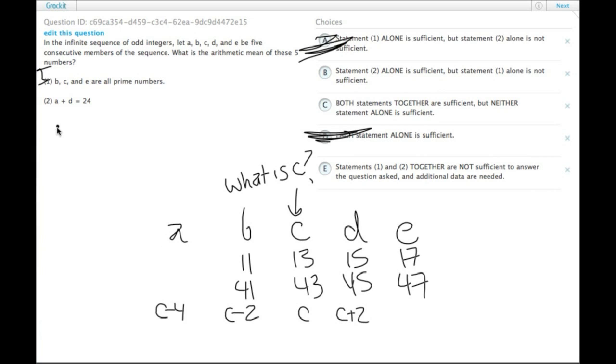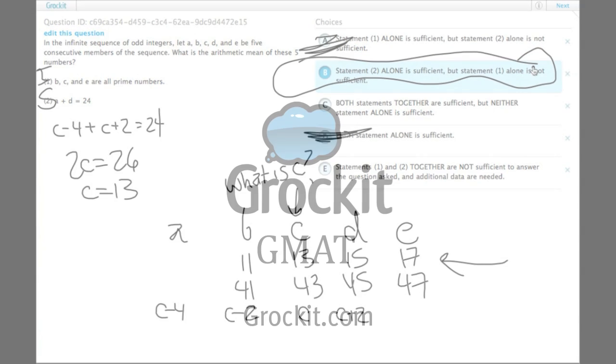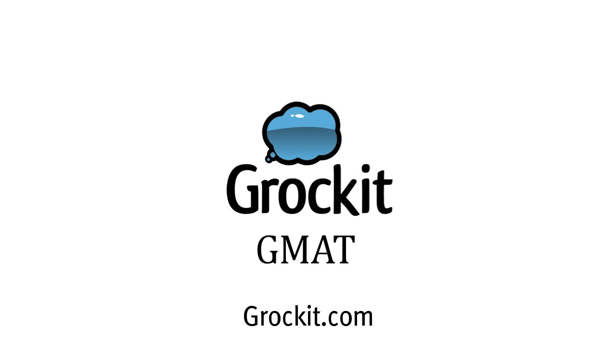We know then that A, which is C minus four, plus C plus two equals 24, and 2C equals 26, and C equals 13. So statement two is sufficient. It tells us actually that this first string of numbers was the correct one, and statement two alone is it. Answer choice B.